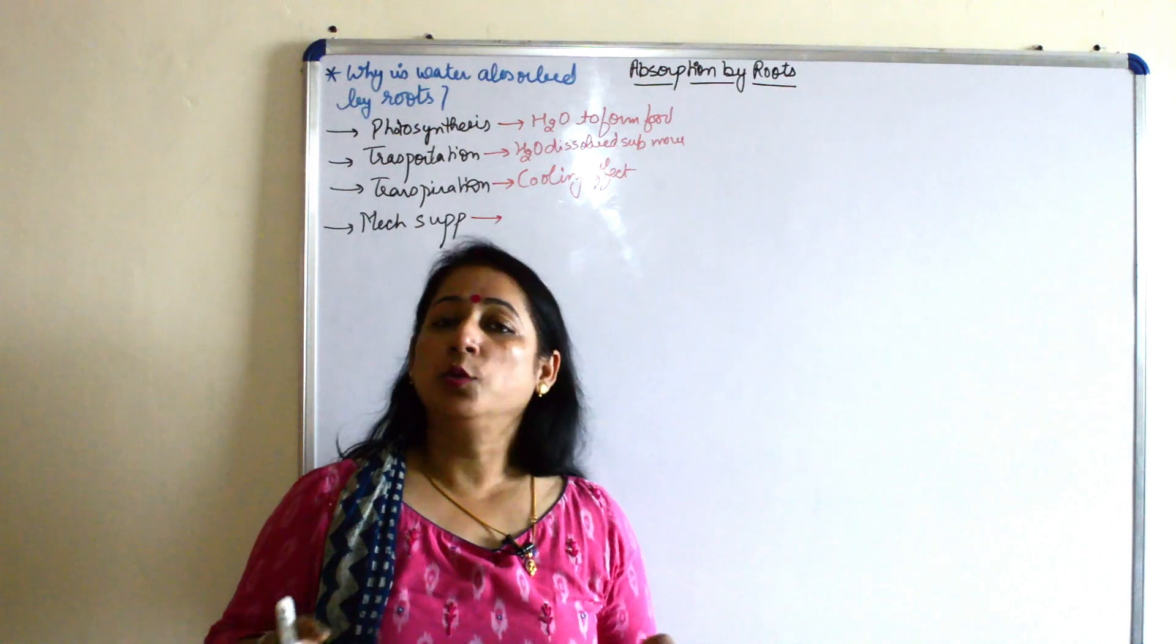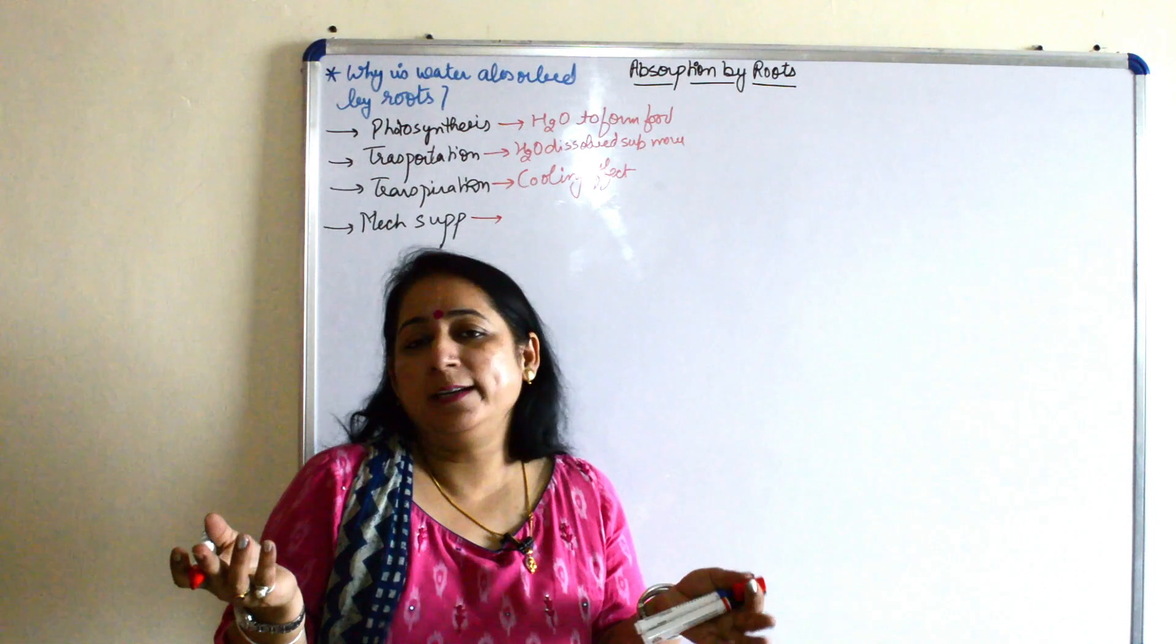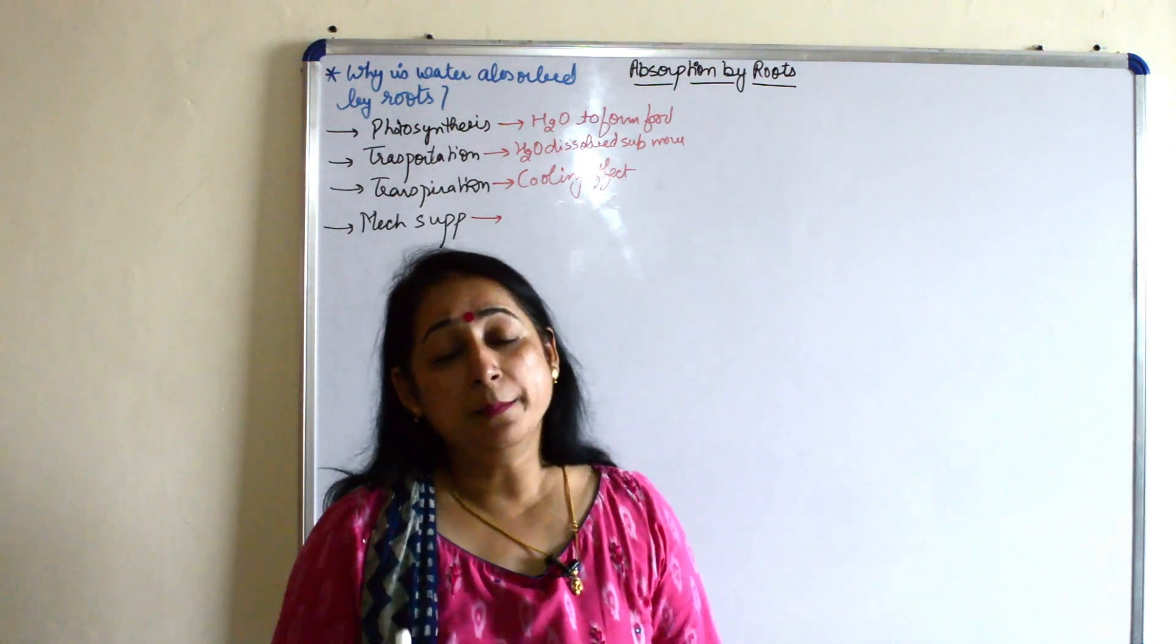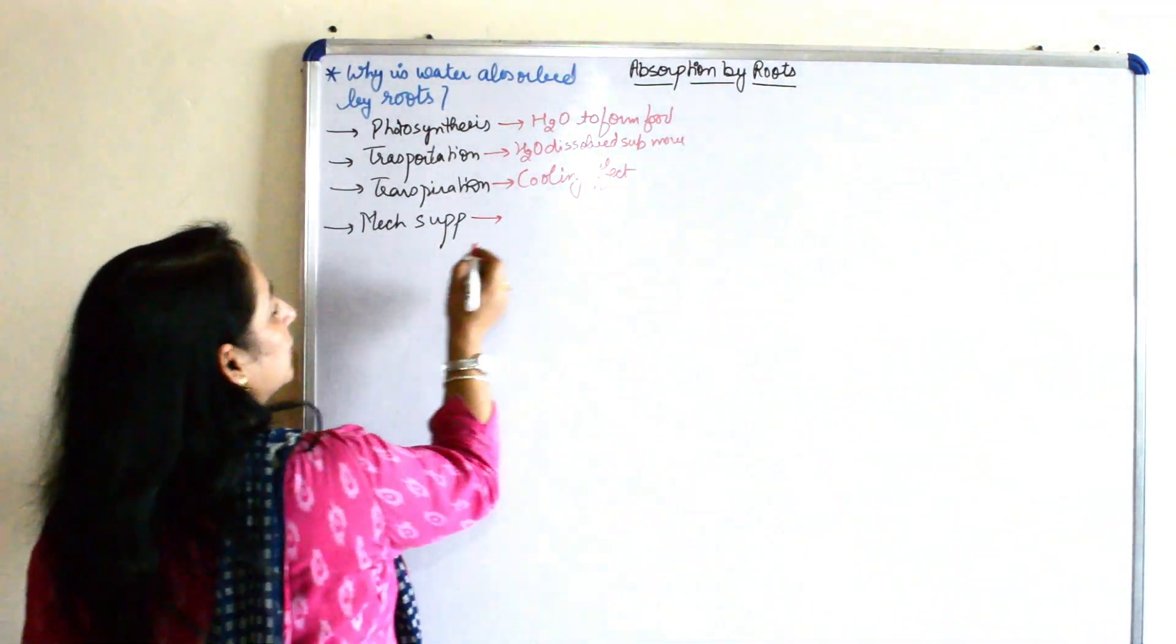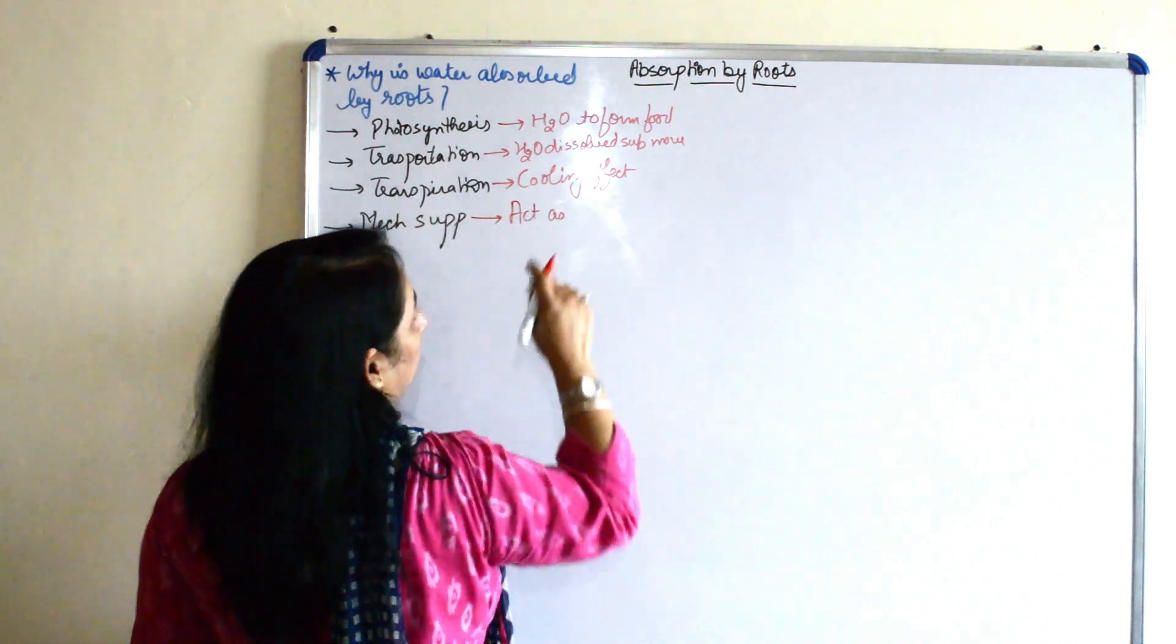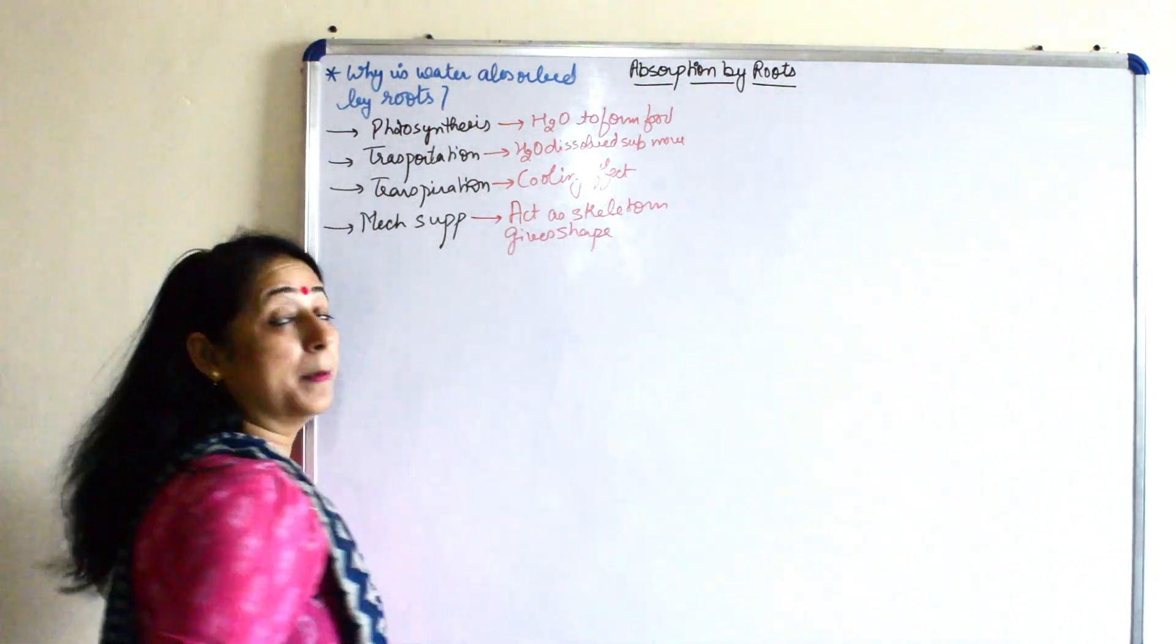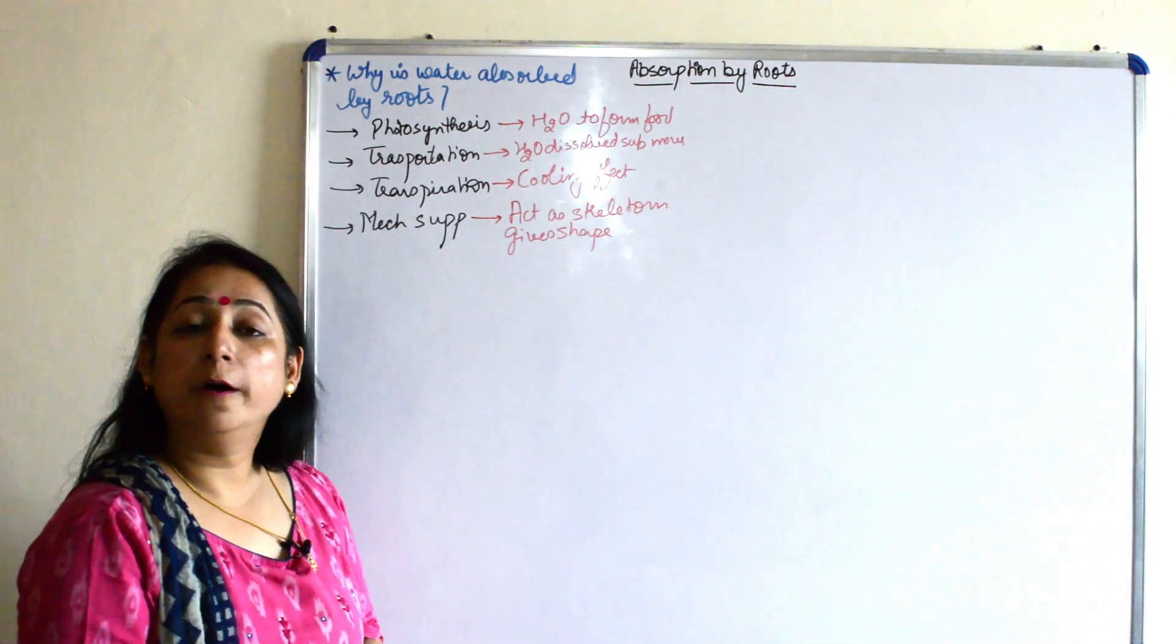So why is that? Because water, plants they don't have a skeleton. So what gives shape to the plant? The turgid condition of water present inside the plants provides it turgidity which helps it to remain stiff. So it acts as skeleton, gives shape to the plant. This is the reason why the plants have to absorb water.